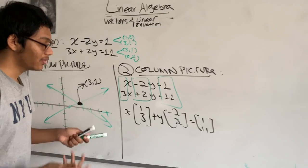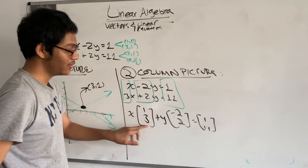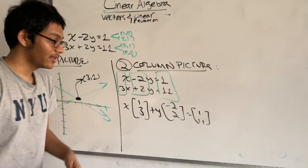So some combination of these two vectors, 1, 3 and minus 2, 2, is going to give me the vector I want, which is 1, 11.